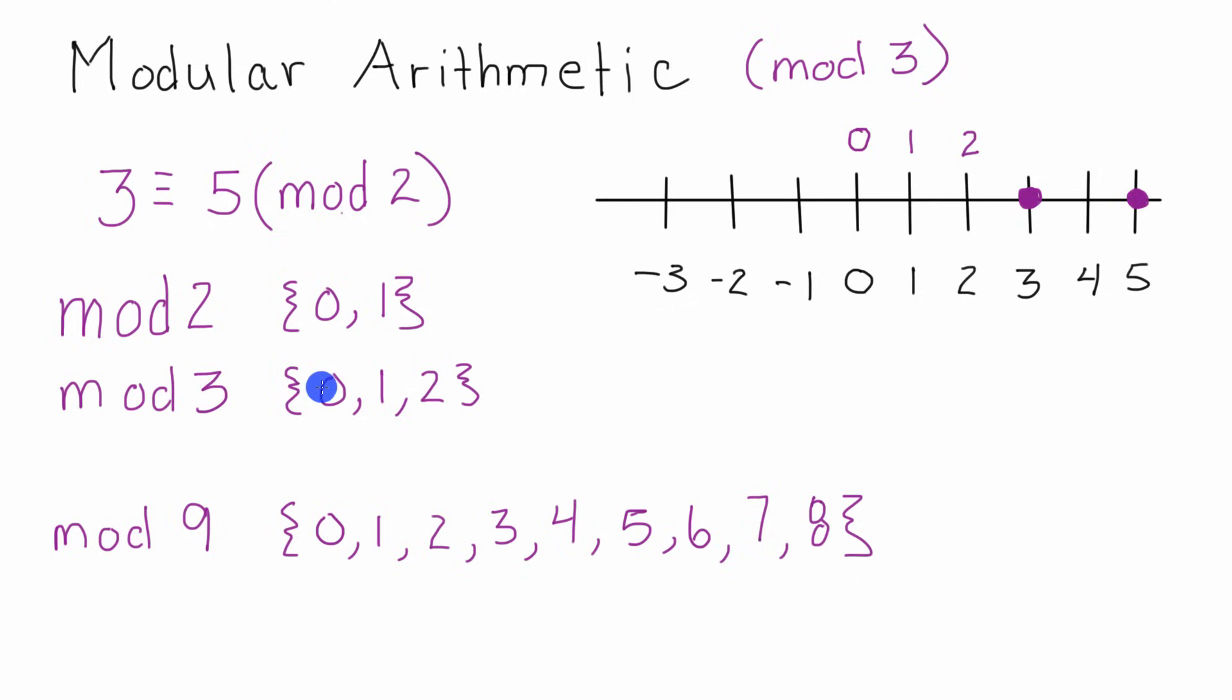But when we're dealing with mod 3, our only possible values are 0, 1, and 2. So since we've already got to 2 here, we start over at 0 again. So 4 becomes 1, and 5 becomes 2. So we just create this pattern all the way across the number line: 0, 1, 2, 0, 1, 2, 0, 1, 2, and it just keeps repeating.